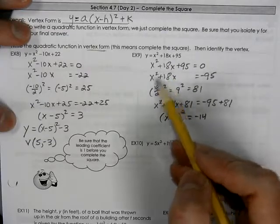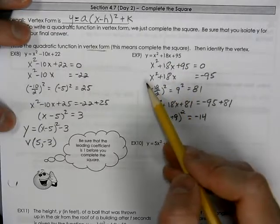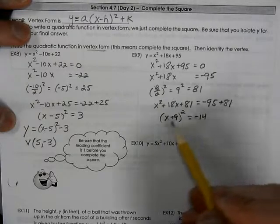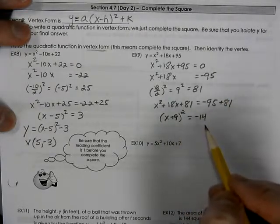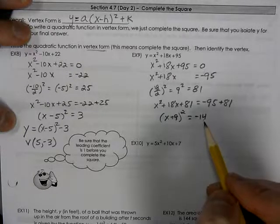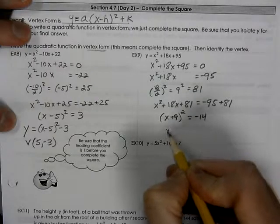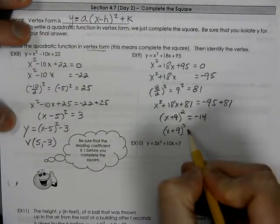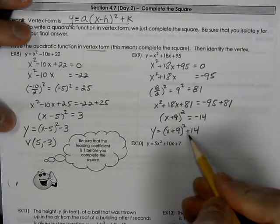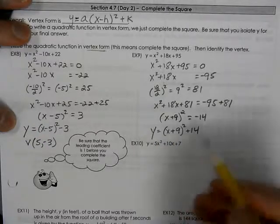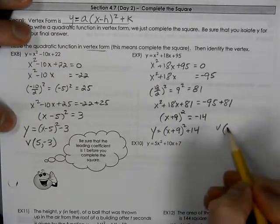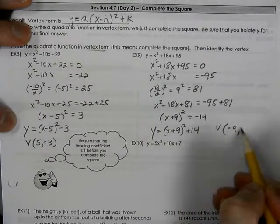Up here, we have b values. You cannot take the square root there. In this case, we don't have a b value. So that's how we go about solving it, as we have in an earlier lesson. Right now, we're trying to put this in vertex form. So we're going to add the 14 across. And this can equal y. So our vertex is going to be located at negative 9, positive 14.